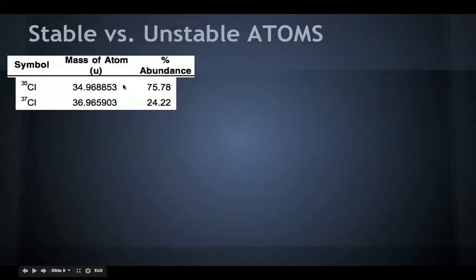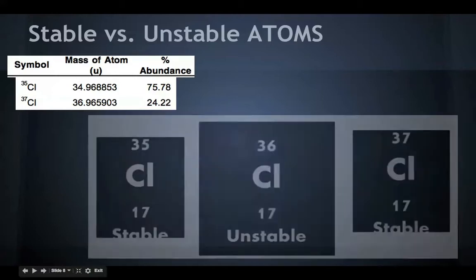Okay, so stable versus unstable atoms. We looked at an example previously with chlorine, where there's chlorine-35 and chlorine-37, and we calculated its average atomic mass using this. But if you notice, chlorine-36 is missing, and there's a reason for this. It's unstable.